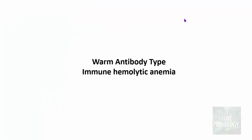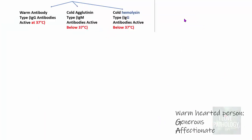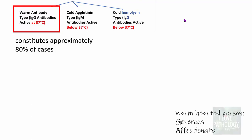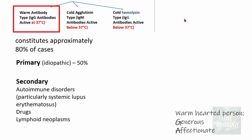Warm antibody type immune hemolytic anemia constitutes approximately 80% of cases. Most often they are primary, meaning idiopathic with no identifiable cause. Secondary causes include various autoimmune disorders, particularly systemic lupus erythematosus, drugs, and some lymphoid neoplasms.